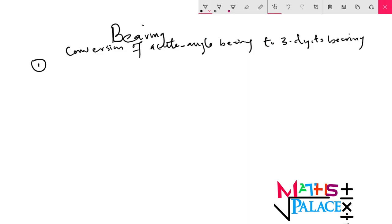For the first example, if you are given south 36 degrees west — this is an acute angle bearing. Let's call it point A. If A is the point, and the point's bearing is south 36 degrees west.